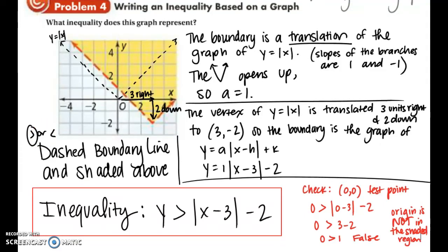To verify the inequality symbol, plug in the test point (0, 0). Substituting gives 0 is greater than 1, which is a false statement, proving the origin is not in the shaded region. Looking at the graph, the origin is indeed in the white non-shaded region, so we are good to go.